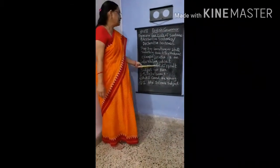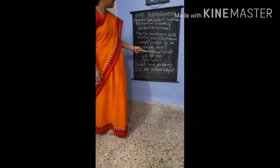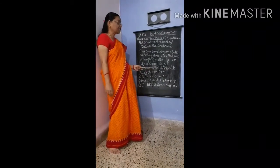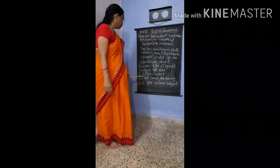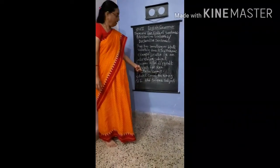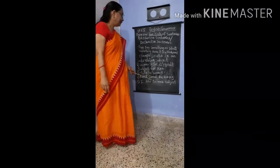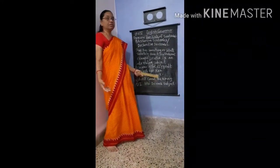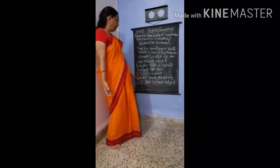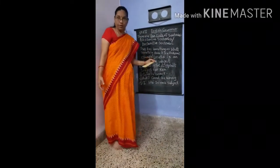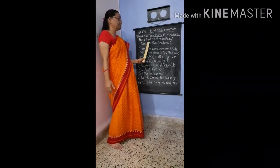'Science is not a difficult subject for Ram' — Ram doesn't feel science as a difficult subject, so something is told. Hence it is a statement, an assertive sentence. 'Sita is correct.' 'Ankit cannot be wrong.' 'I like science subject.' So these are five examples of an assertive sentence, and we have completed the assertive sentence.